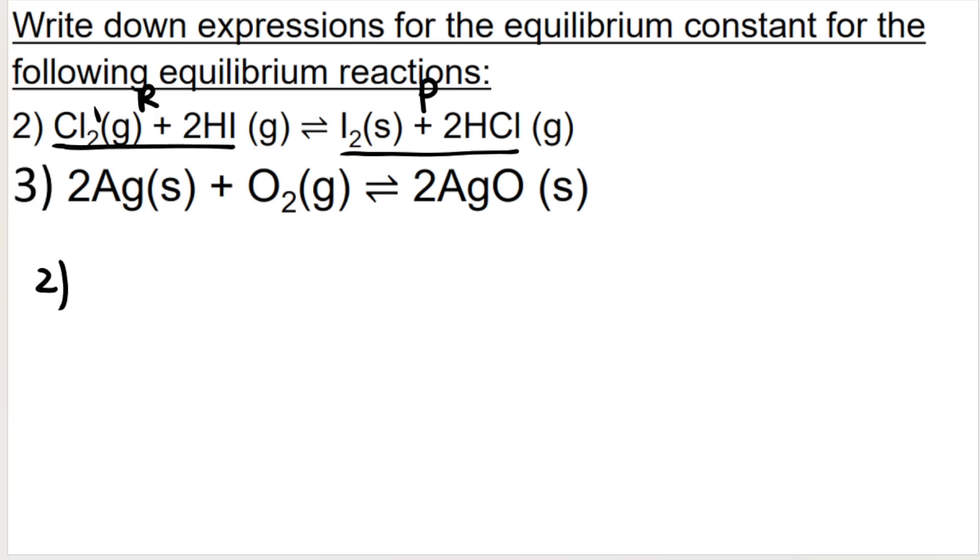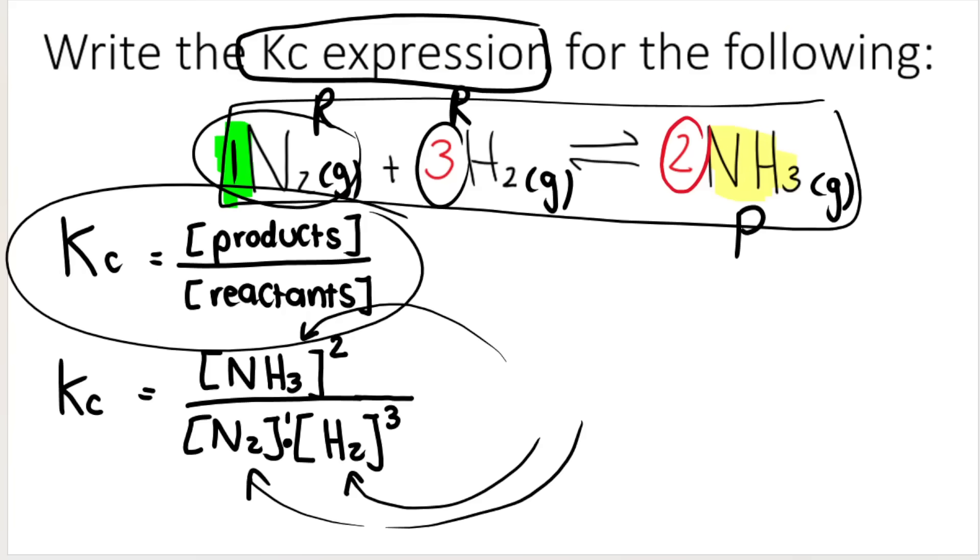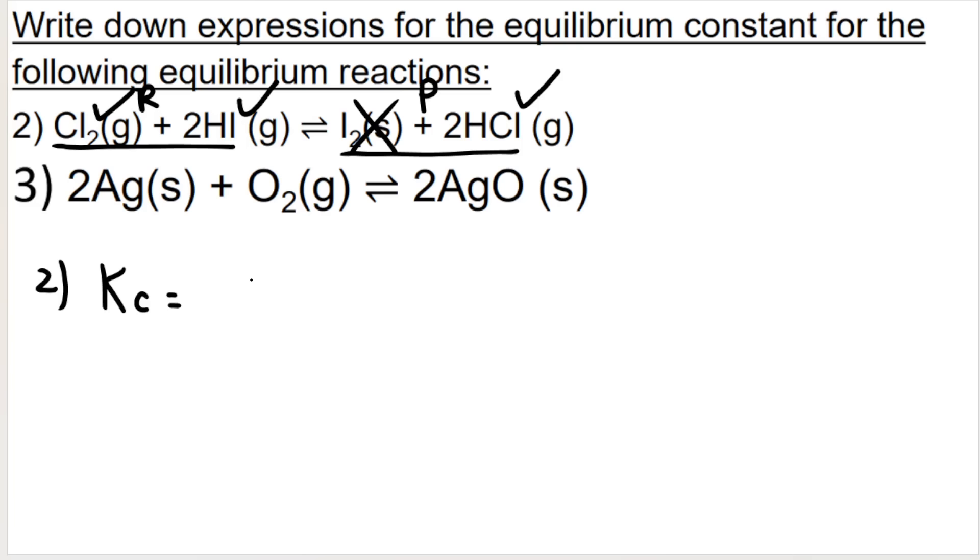So how would you do this? Kc is equal to concentration of products over concentration of reactants. I can go ahead and write that out first, but you don't need to. It's not going to get you a mark. So in my case, HCl is my product,